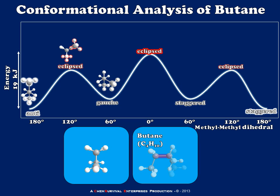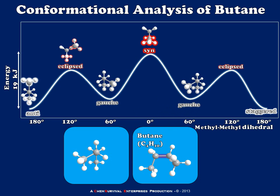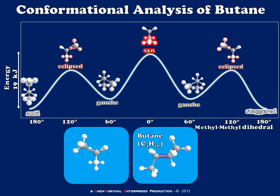Proceeding through another 60 degree rotation takes me to my least stable conformation, one in which the two methyl groups eclipse one another. When the two largest groups eclipse one another, we refer to this as a syn conformer. And the syn conformer is always the highest energy possibility. Another 60 degree rotation will take me back to another gauche orientation. Yet another 60 degree rotation leads me again to an eclipsed conformer in which my largest substituents are eclipsing smaller ones. And my final 60 degree rotation will bring me back to my starting point in an anti conformation.